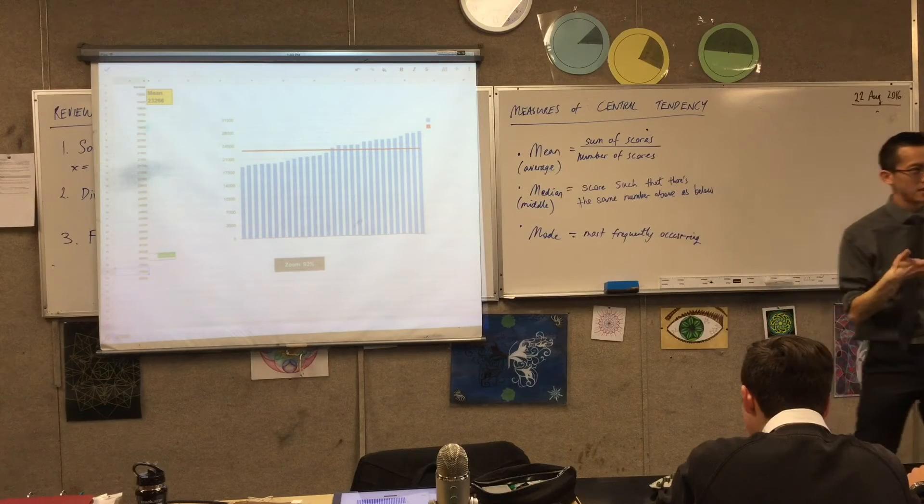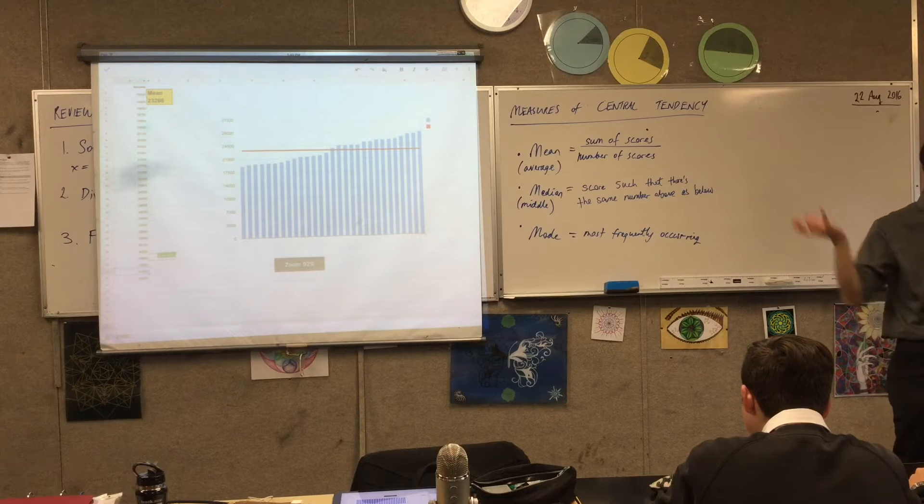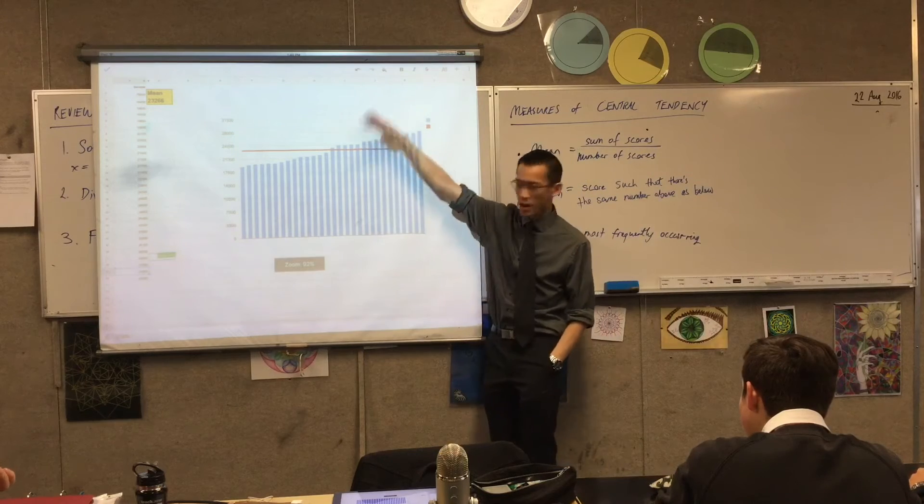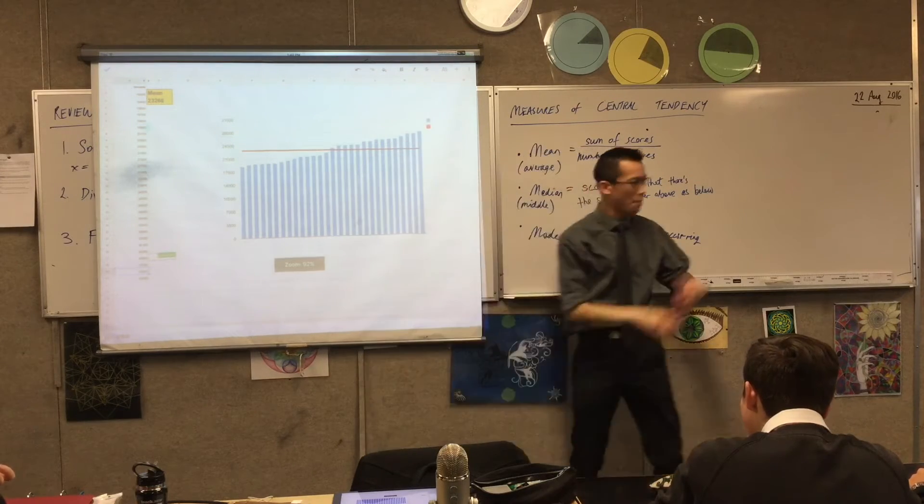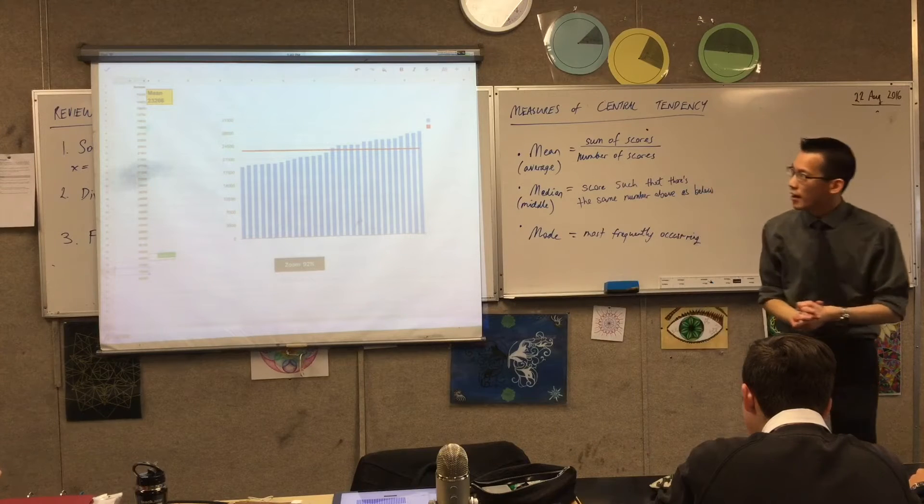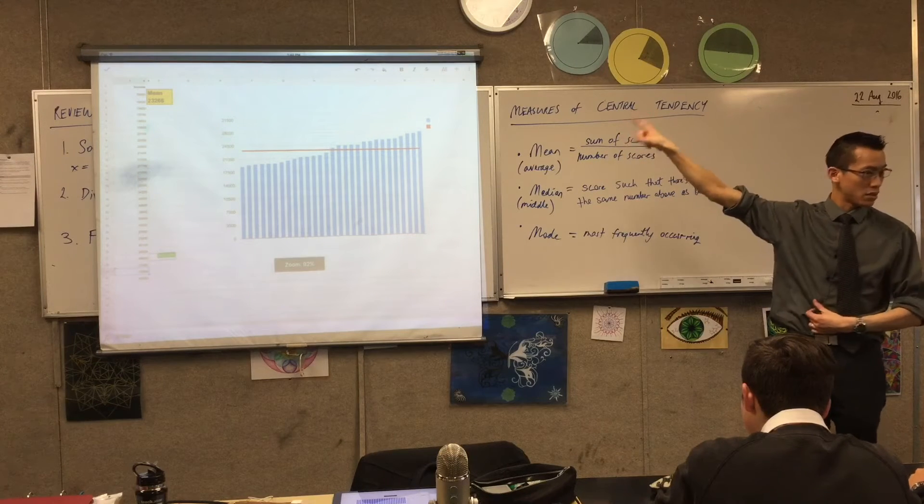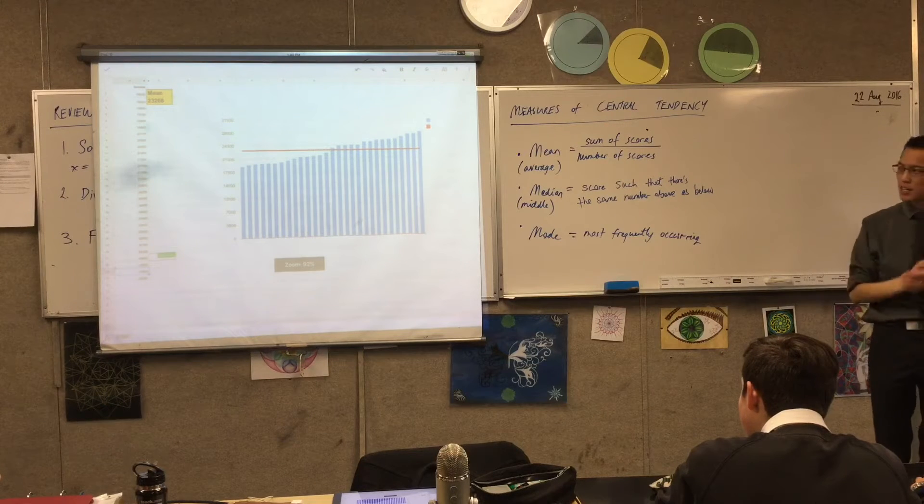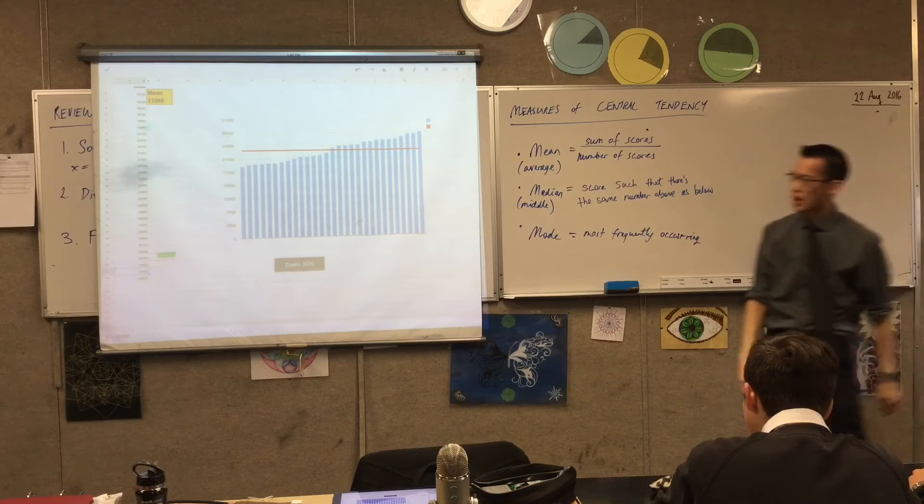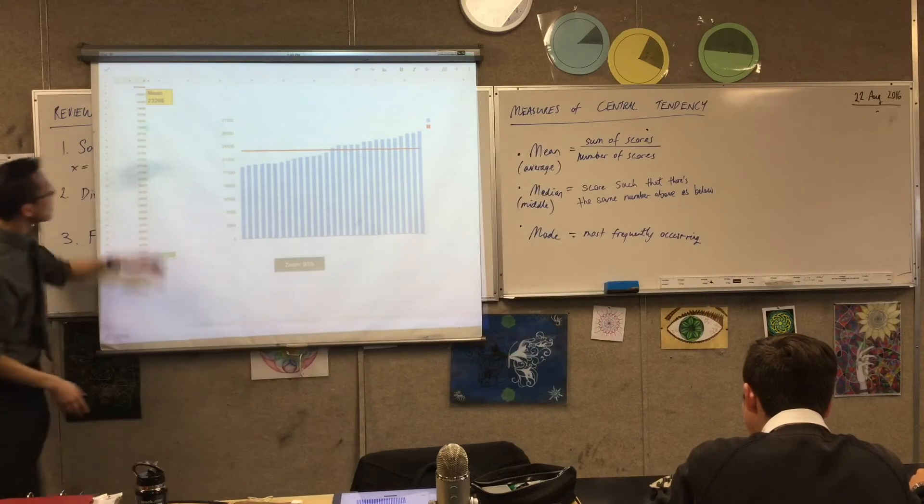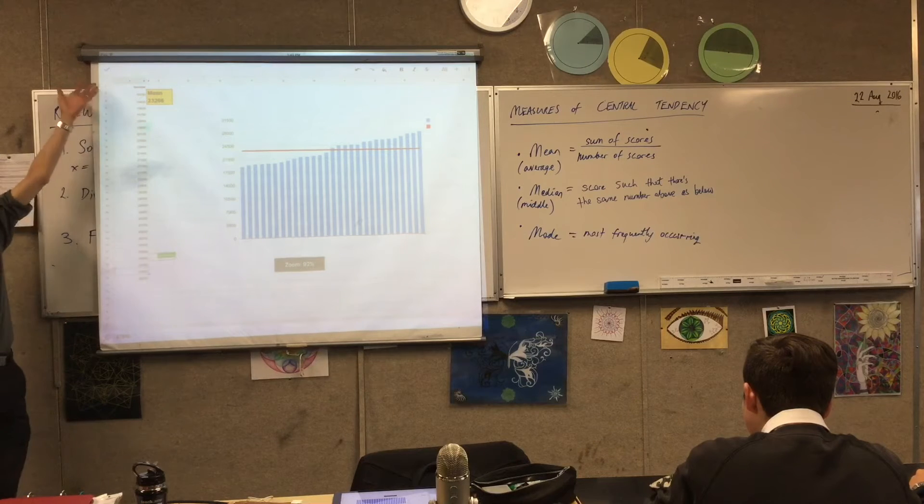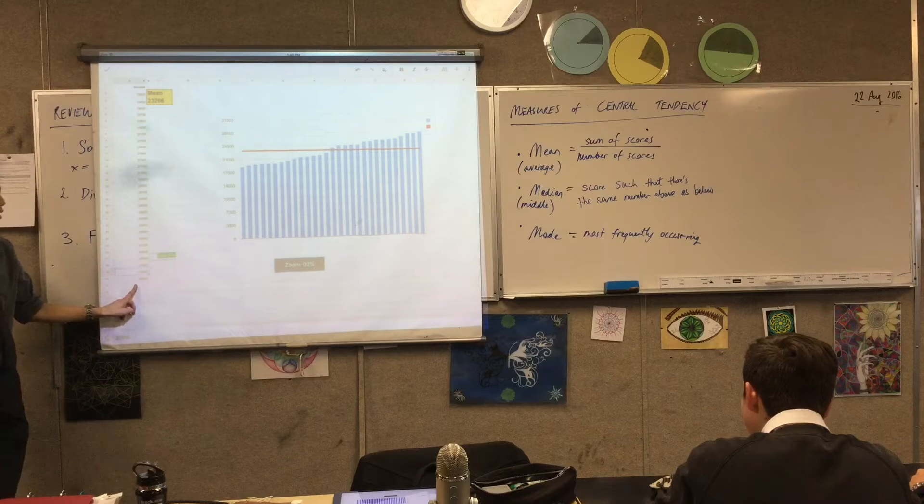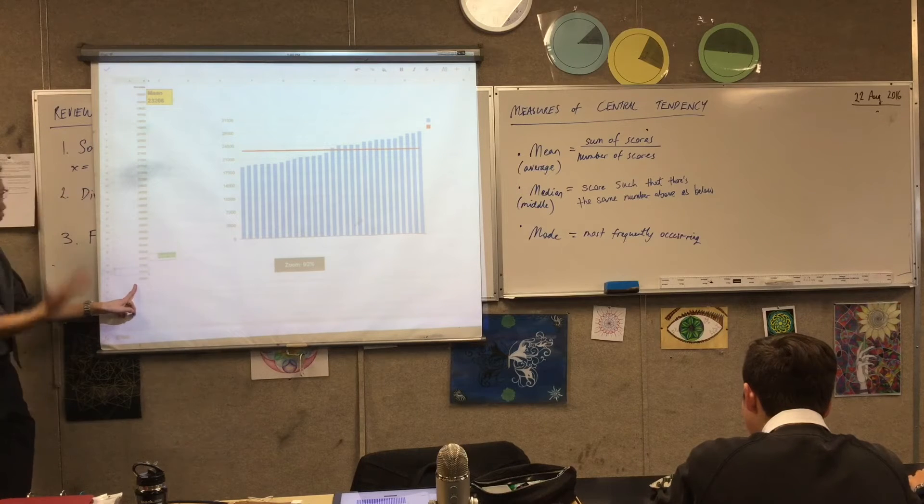You can see, if you squint really hard, you'll see a bunch of scores on the left. Each one of those is represented by a column, and then this red line is the average. Now, have a look. Would you say that's a fair summary of where the middle of the group is, where the center is? Yeah. There's a bunch above, a bunch below, and they're about the same distance. So, I'm happy with that.